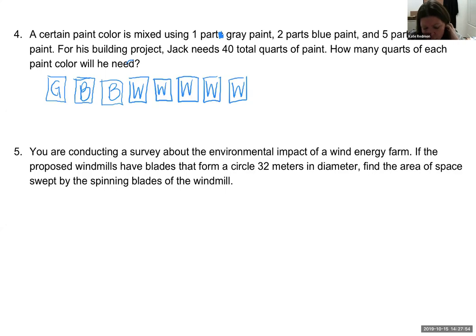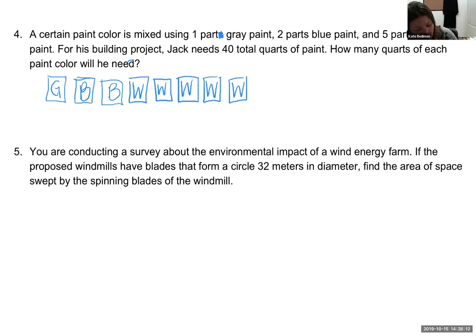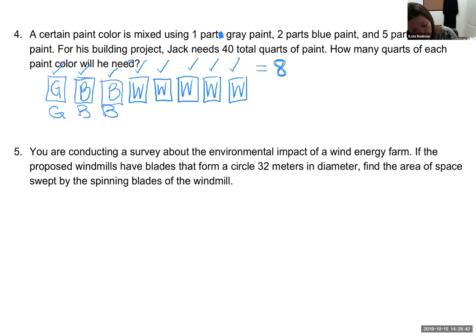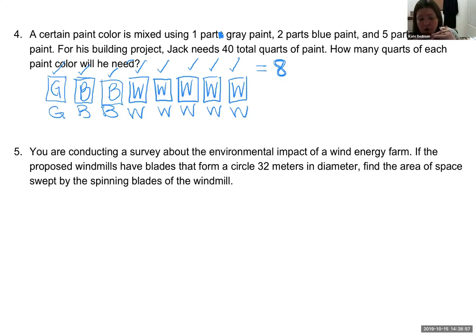I'll draw one box for gray paint, two boxes for blue paint, and five boxes for white paint — a nice visual representation of this paint mixing ratio. Jack needs 40 total quarts, meaning all colors together. Looking at my diagram, I have eight parts in one set of this ratio. I can keep repeating this relationship — 8, 16, 24, 32, 40 — until I reach 40 total parts.